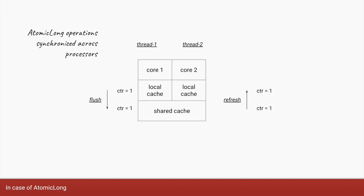Internally, AtomicLong works something like this: thread one is running on core one of the CPU and thread two is running on core two. Both cores have their local caches. Initially core one increments the counter from zero to one. If thread two wants to increment the counter, it needs the updated value — its local cache may still have the old value of zero. So there has to be a flushing of the counter from core one's local cache into the shared cache and then into core two's local cache. That synchronization is required because all threads on all cores operate on the single counter.